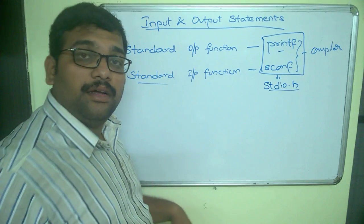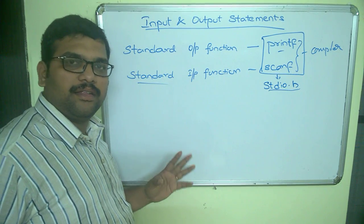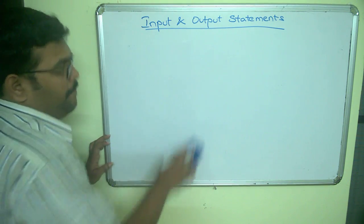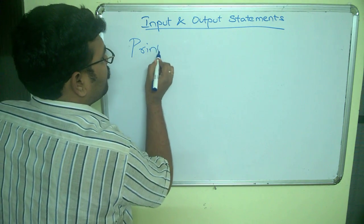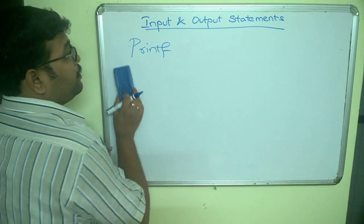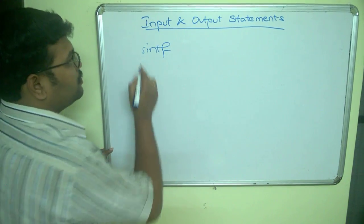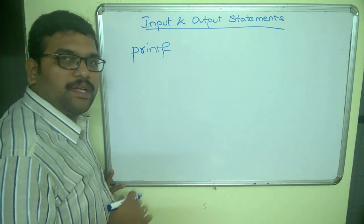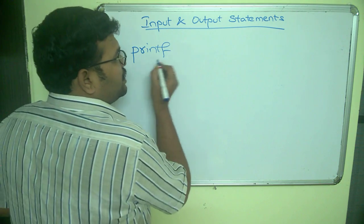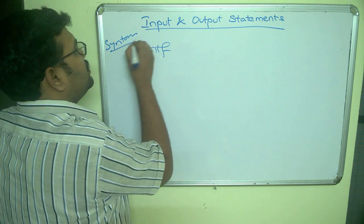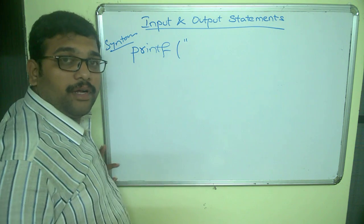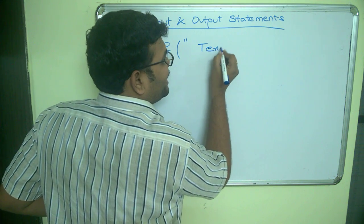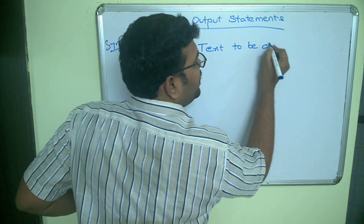Now let us see the syntax for the printf function and scanf function. Be careful — C language is case sensitive, so there is a difference between small letters and capital letters. This printf is everything in lowercase letters. The syntax for printf is: printf, followed by inverted quotations and the text to be displayed on the screen.